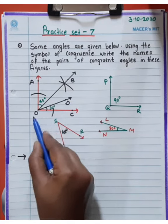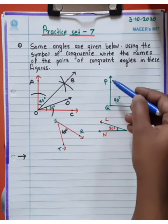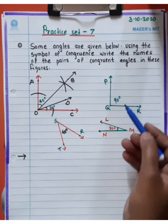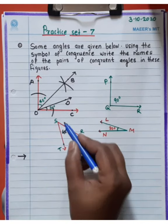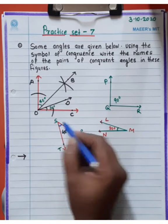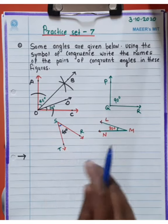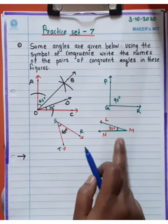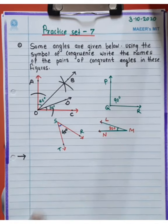Angle DOC is equal to 30 degrees. Then from the second figure: angle PQR is equal to 90 degrees, angle TSR is equal to 45 degrees, and angle NML is equal to 30 degrees.